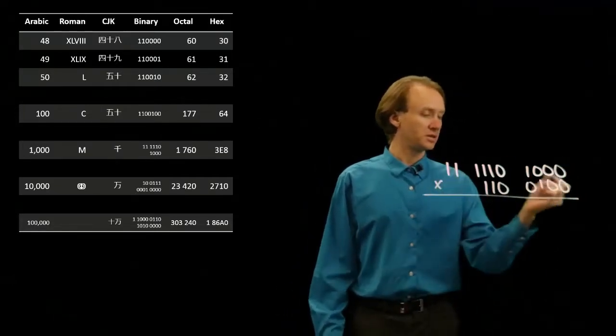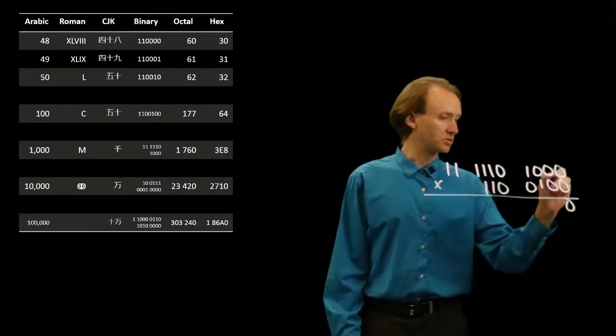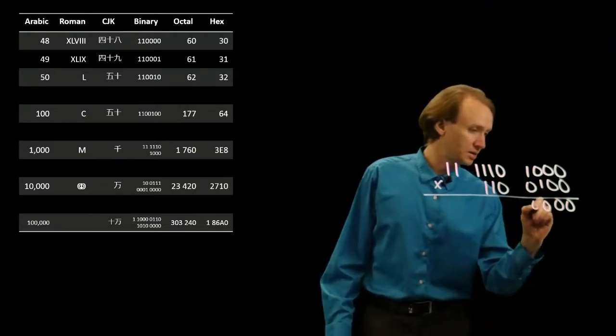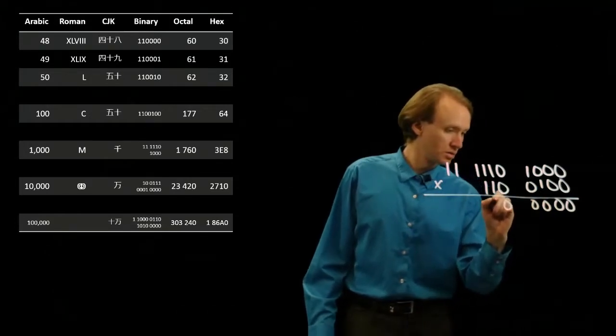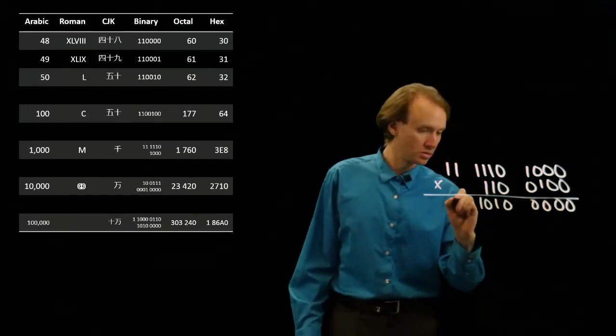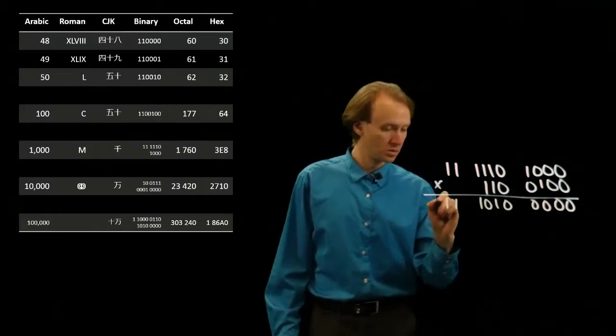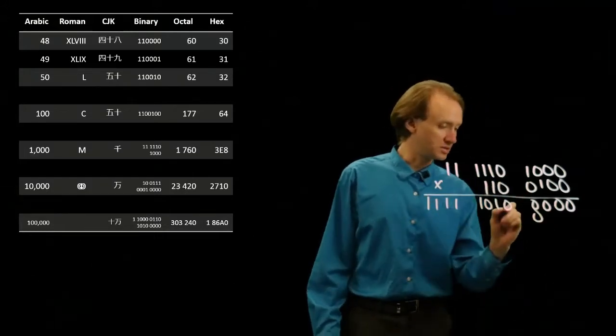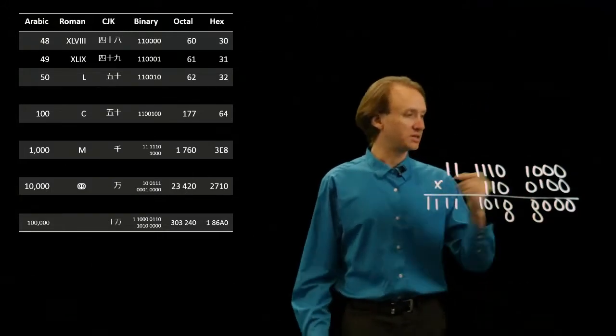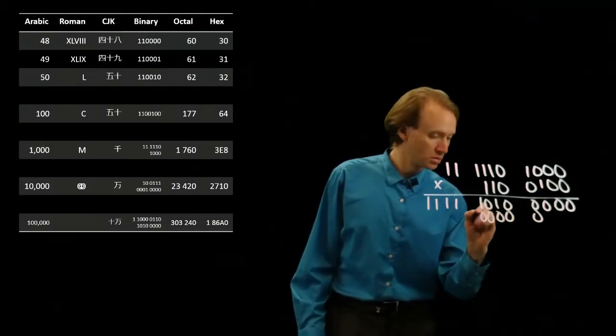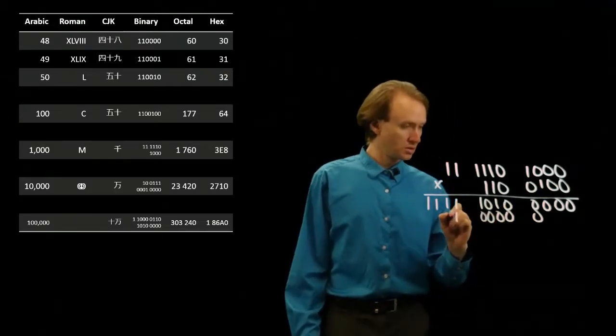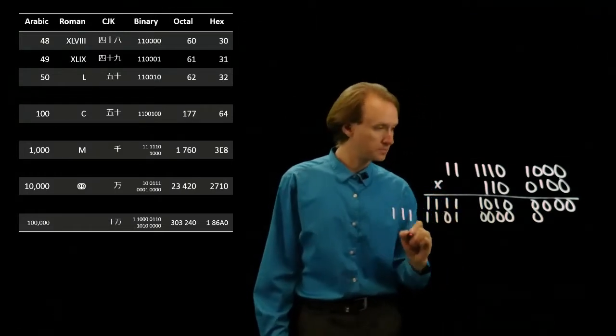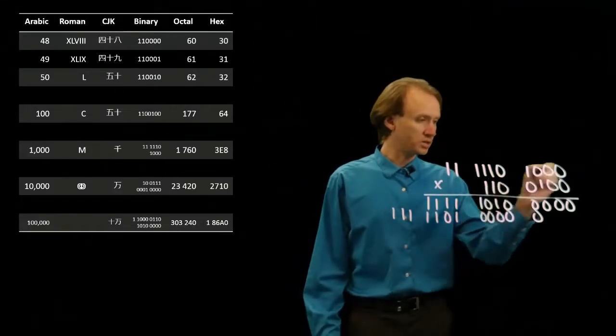So, 0 times anything is 0, 0 times anything is 0, 1 times anything is the anything. So, I'll copy down the anything and then I've got 0 times anything is 0, 0 times anything is 0, 1 times anything is the anything. And 1 times anything is the anything.